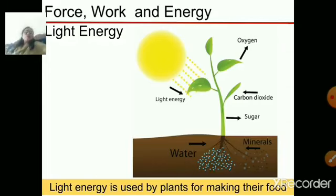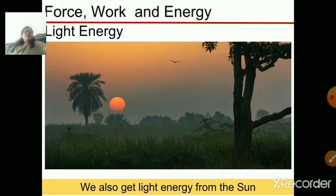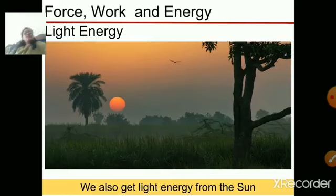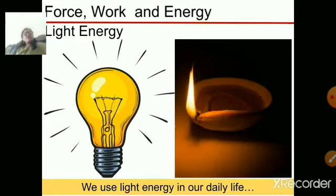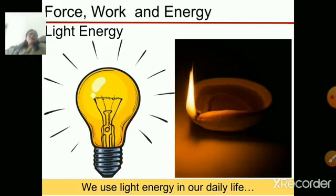You have already learned this. Light energy from the sun allows us to see in the daytime. At night, we have to make use of electricity. But in the daytime, we are very well able to see things because of the light energy from the sun. From electric bulbs, we get light. Even this lamp — by burning oil fuel, the light is produced and we get light energy.